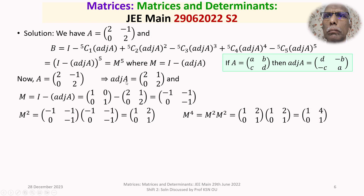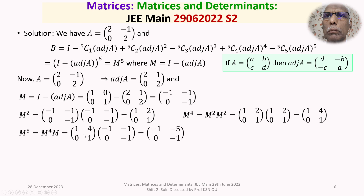We want M to the power of 5, so M to the power 5 equals M to the power 4 multiplied by M. M to the power 4 is [1, 4; 0, 1] and M is [-1, -1; 0, -1]. Multiplying these gives M to the power 5 equals [-1, -5; 0, -1].